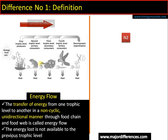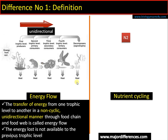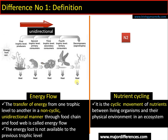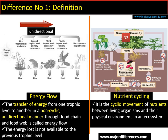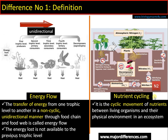In the case of nutrient cycling, there is cycling of nutrients between living organisms and their physical environment in an ecosystem. Take the example of nitrogen cycling: nitrogen is abundant in the atmosphere, fixed by microorganisms, then taken up by plants, followed by animals — entering a food chain — and finally denitrifying bacteria return this nitrogen back to the atmosphere. It is simply the cycling of nutrients between living and non-living components in an ecosystem.